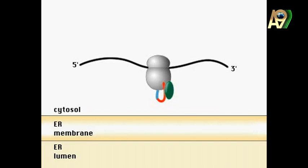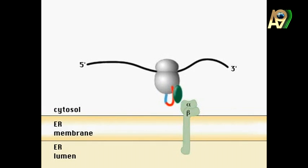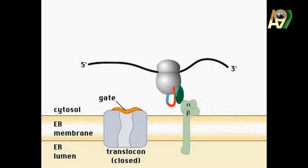Then the ribosome, mRNA and partially produced amino acid chain come to the endoplasmic reticulum together and settle on rough endoplasmic reticulum, but it doesn't settle anywhere random. It settles on an available translocation protein.